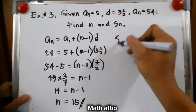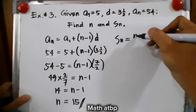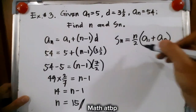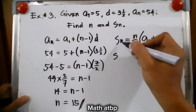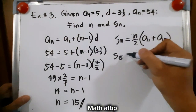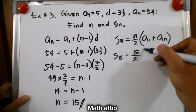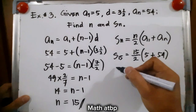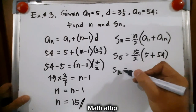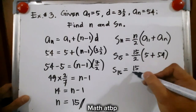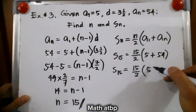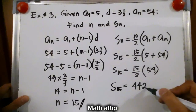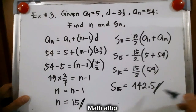Solving for s sub n, we have s sub n is equal to n over 2 times a sub 1 plus a sub n. Our n is 15, so s sub n is equal to 15 over 2 times a sub 1, which is 5, plus 54, our a sub n. The sum of 15 terms is equal to 15 over 2 times 59, and the sum of 15 terms is equal to 442.5. I hope you can follow.